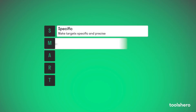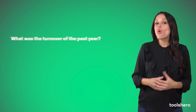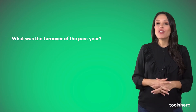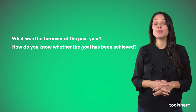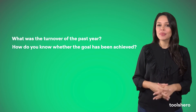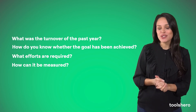The M for Measurable makes goals measurable by using benchmarks. It's important to have measurable goals so that you can track your progress and stay motivated. Questions to help you with this are: What was the turnover of the past year? How do you know whether the goal has been achieved? What efforts are required? And how can it be measured?